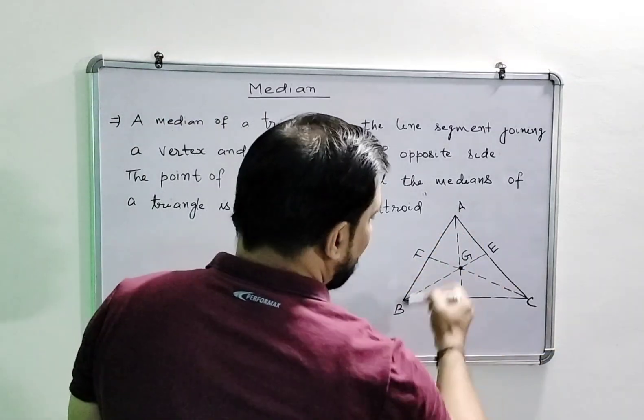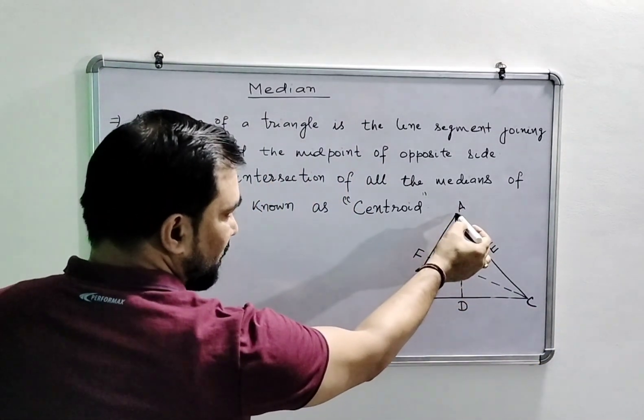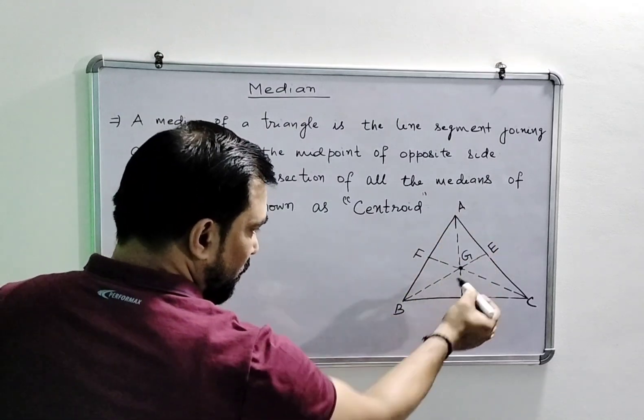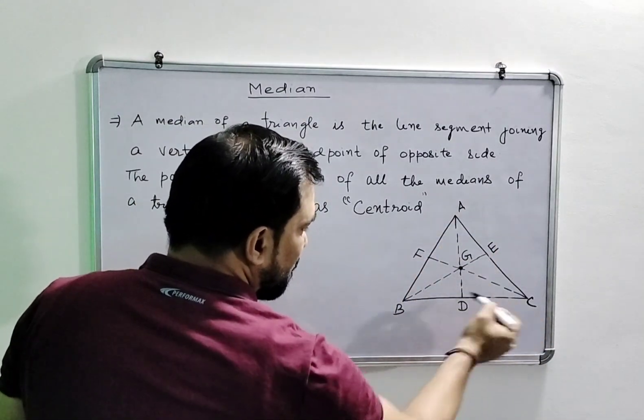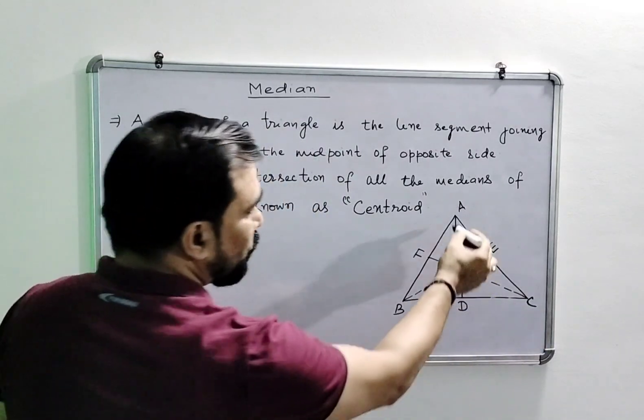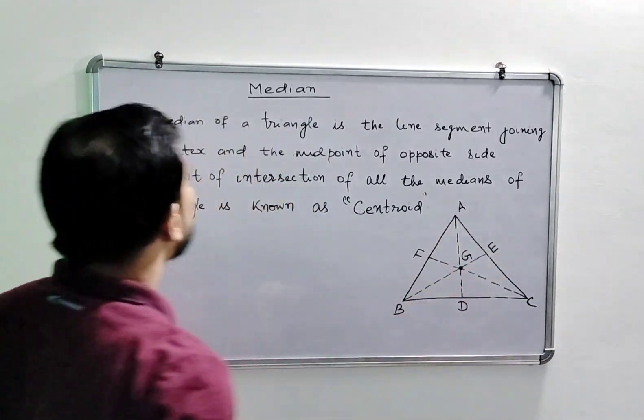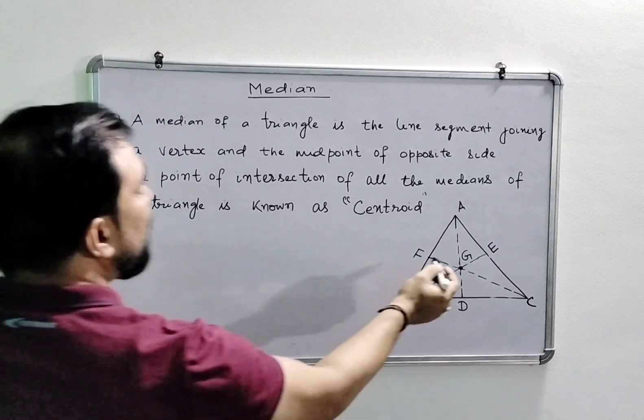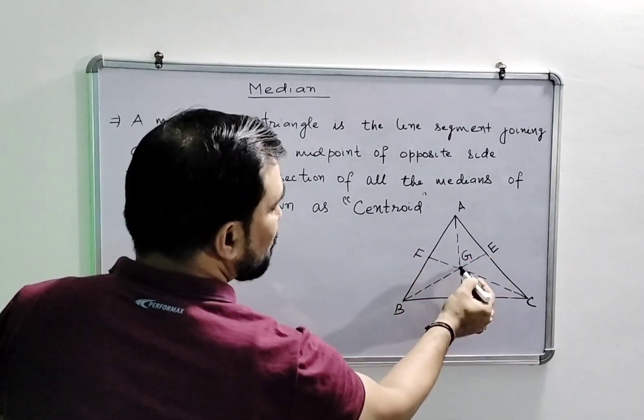In triangle ABC, if you draw a line from vertex A to its opposite side BC, it will divide BC into equal parts. That joining line is called a median, and the point of intersection of all the medians is called the centroid.